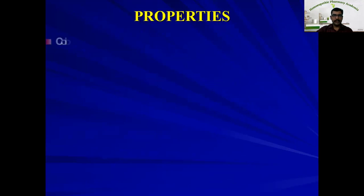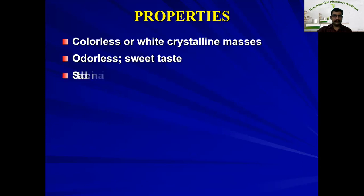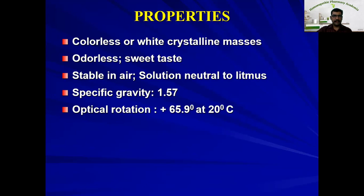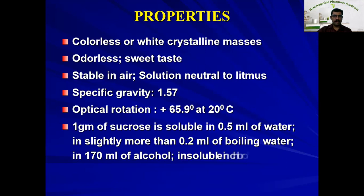The properties of cane sugar: it is a colorless or white crystalline mass, odorless and sweet in taste — sweeter than lactose. It is stable in air but neutral to litmus, being neither acidic nor alkaline. The specific gravity is 1.57 and optical rotation is +65.9°. Solubility: 1 gram of sucrose dissolves in 0.5 ml of water, slightly more than 2.2 ml of boiling water, and 170 ml of alcohol. It is practically insoluble in chloroform and ether — more soluble overall than lactose.